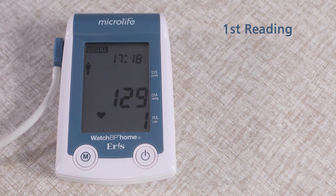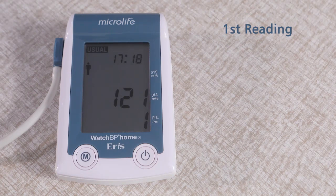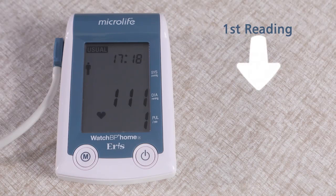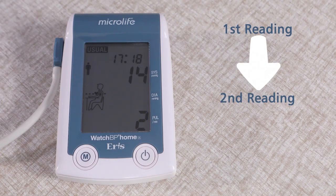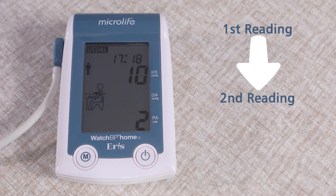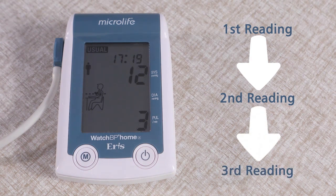Continue to sit in the same position. After 15 seconds, the machine will take your second reading with the cuff compressing and deflating again. The same procedure will be repeated for the third time.